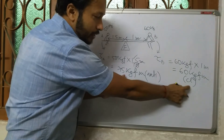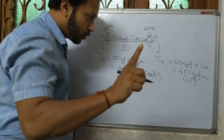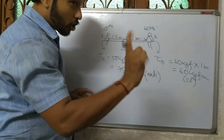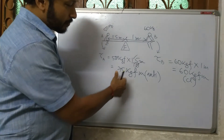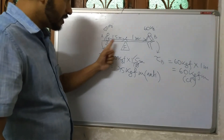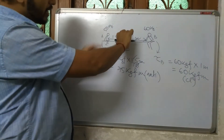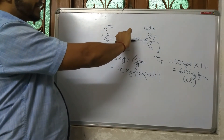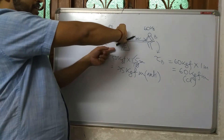Are the two torques equal? Anticlockwise torque is 75 and clockwise torque is 60 — they are not the same. So the seesaw is not balanced. The anticlockwise side has the higher torque at 75, so the seesaw will tilt toward that side, because that side is heavier.